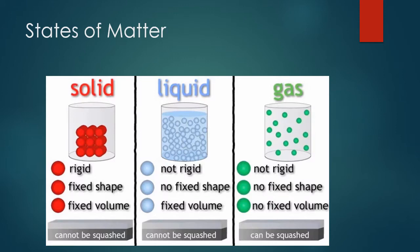Now let's look at the states of matter. There are three main states — solid, liquid, and gas. A solid is rigid: it has a fixed shape and a fixed volume and cannot be compressed. Think of an aluminum cube — if you tried to squish it, you could not. You would have to melt it down to change it from a fixed shape and volume.